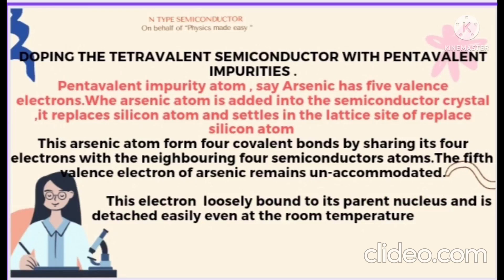In this lecture, we are going to learn about the different types of the extrinsic semiconductor. The first one is the N-type semiconductor, which means doping the tetravalent semiconductor with pentavalent impurity. We can take pentavalent impurity, for example, arsenic, which has five valence electrons in its outer shell. When an arsenic atom is added into the semiconductor crystal, it replaces a silicon atom and settles in the lattice site of the replaced silicon atom, and this arsenic atom forms four covalent bonds by sharing its four electrons with neighboring four semiconductor atoms.